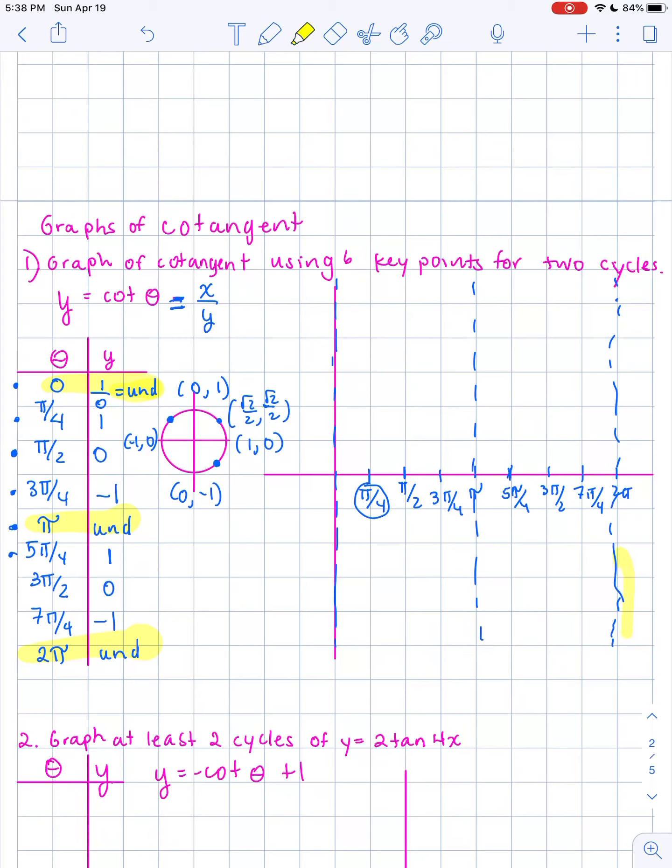And then plotting our points from there. Now plotting the other defined points we have at π over 4, we get the coordinate point 1, at π over 2, it's 0, at 3π over 4, negative 1. So you should notice that this looks exactly like the tangent function, except for it starts off going towards infinity on this side, and then ends at, as it approaches π, it's going to negative infinity.